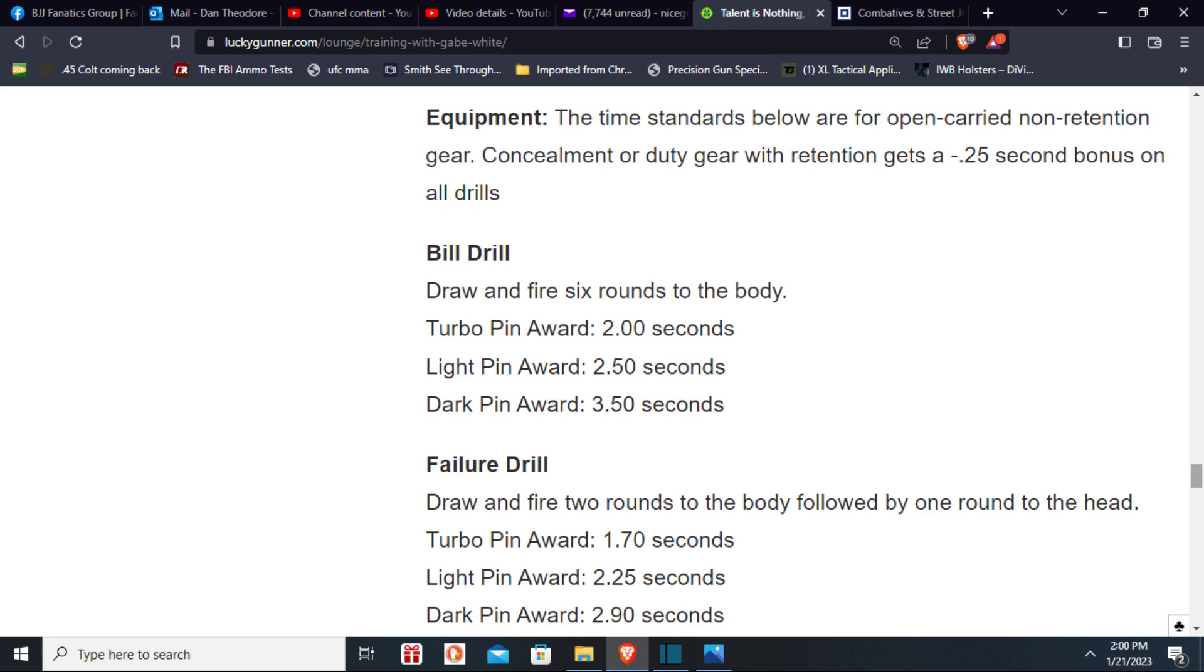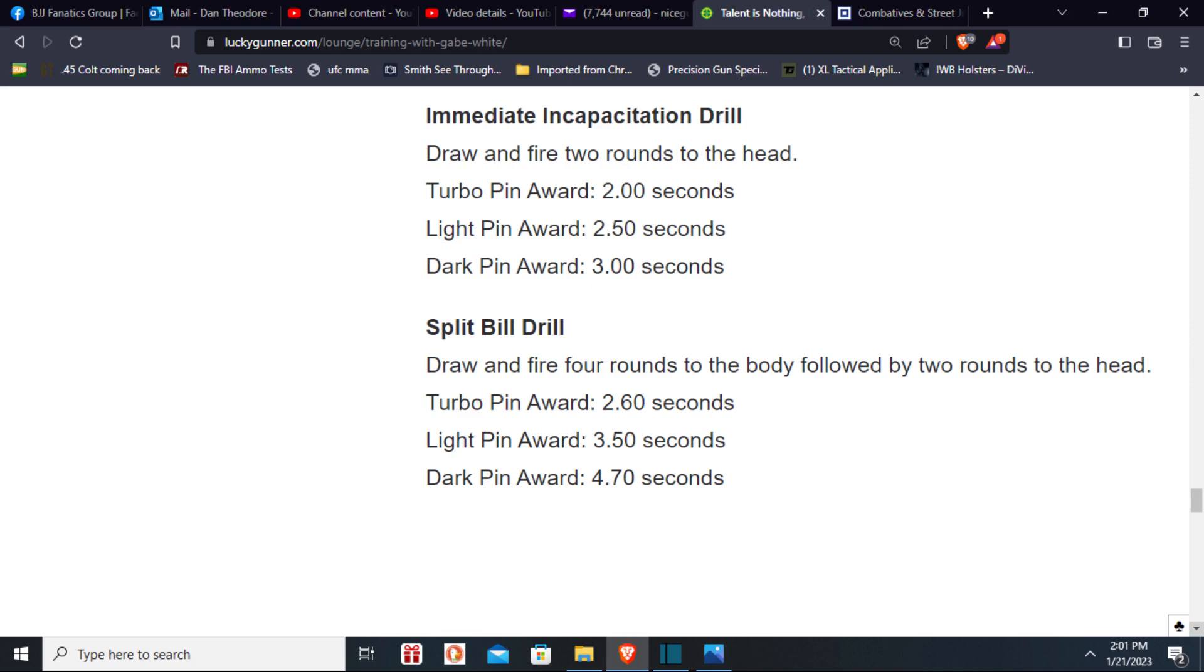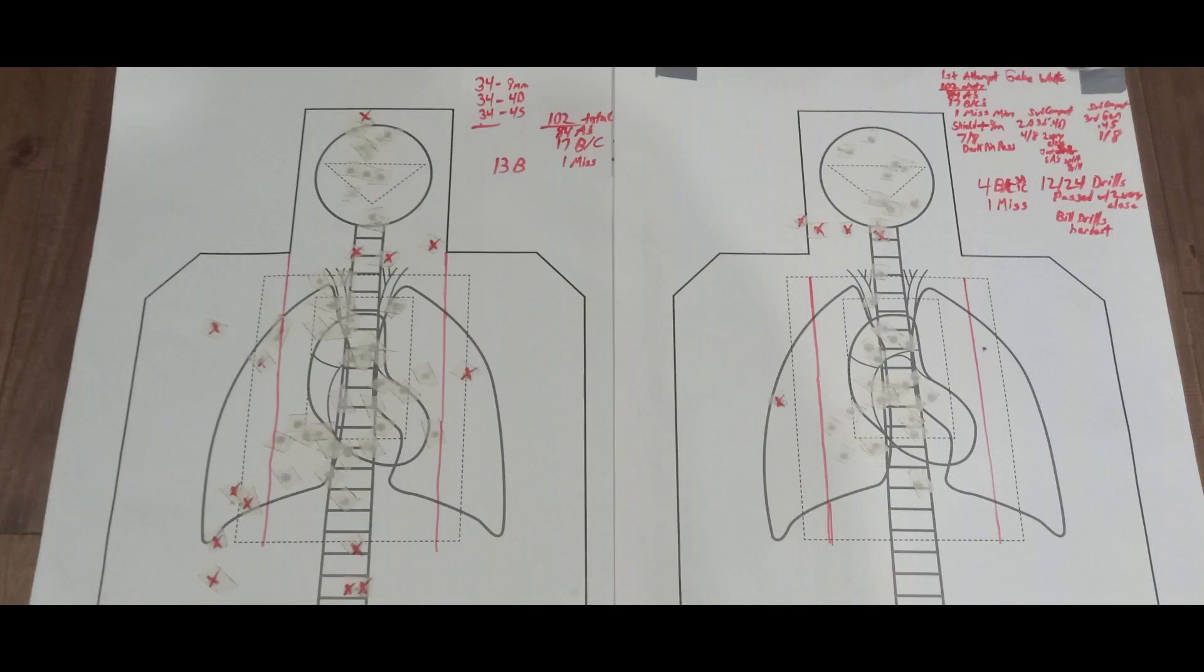As you see the times there, you add on the 0.25, so 3.75. Medium incapacitation drill would be 3.25 for two headshots, and a split bill drill which I've never done before - four to the body, two to the head, 4.95 from concealment.